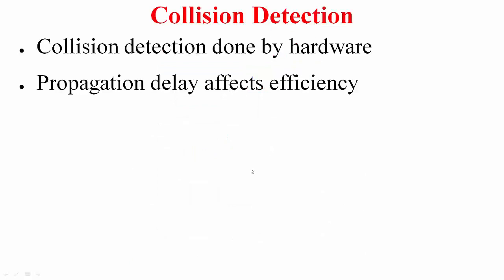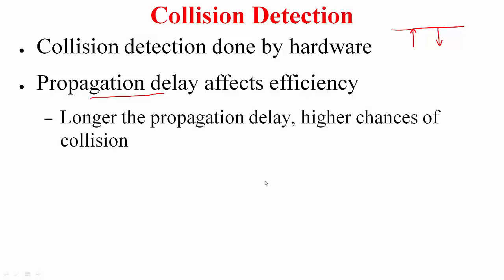A bit more detail on collision detection: this collision detection is typically done by the hardware. The sender, as it is transmitting on the link, also receives and compares it with what was being sent. If they do not match, it detects there is a collision. This propagation delay as part of collision detection can significantly impact efficiency. If the propagation delay was large, would efficiency be better or less? The longer the propagation delay, the more time it will take for nodes to detect whether the channel is idle or busy, and they will start transmission because they think it is idle, leading to higher chances of collision.